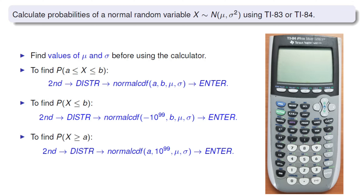Finally, we are often interested in finding the probability for X to be at least a given value — that's P(X ≥ a). In this case we have a lower bound of a, but no upper bound — the upper limit is infinity. Similarly, we use a really large positive number to represent positive infinity. So: press 2nd, DISTR, normalcdf. Lower bound is a, upper bound is 10^99, mean is mu, and standard deviation is sigma, then enter. That's how we find probabilities for all three types of normal distribution problems.